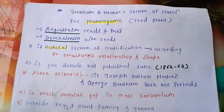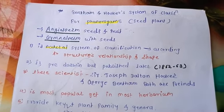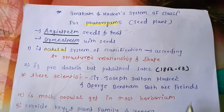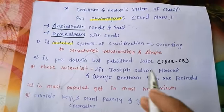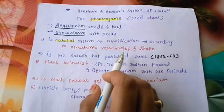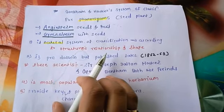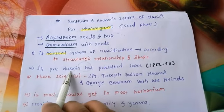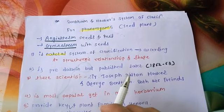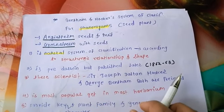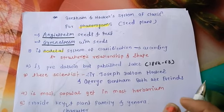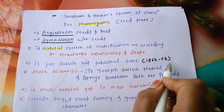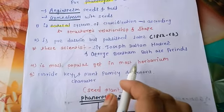Bentham and Hooker's system of classification is a natural system based on structure, relationship, and shape. It is a pre-Darwinian system — it was invented before Darwin, but published later in 1862-63.